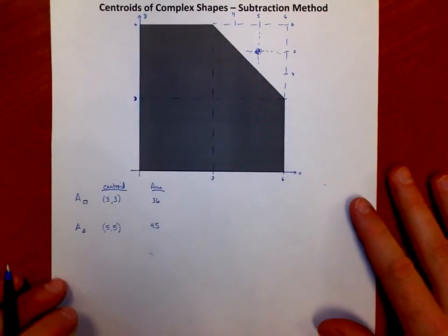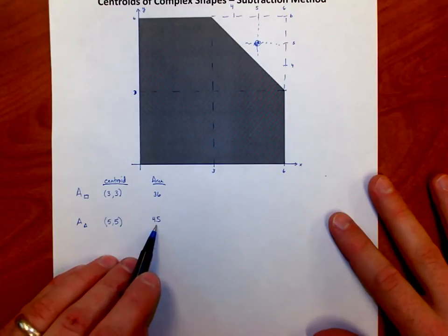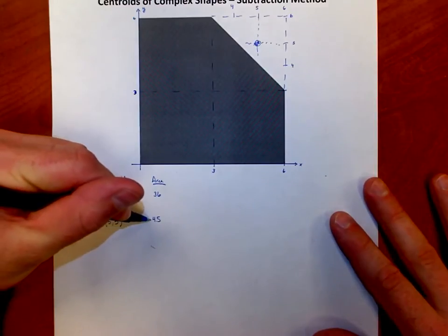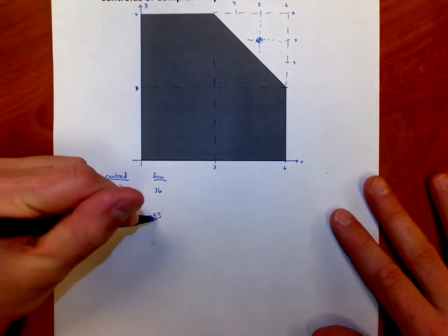Now, here's the kicker. I actually took the area of the triangle away. So I call it the method of subtraction because I'm actually going to consider that to be a negative area. That's an area that I'm removing.